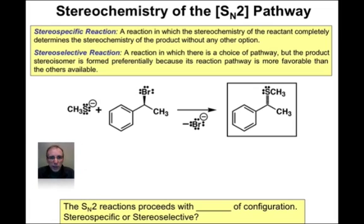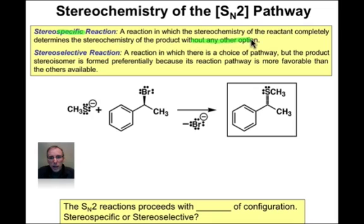Let me introduce some words that describe the stereochemistry of reactions. We say that a reaction is stereospecific if the stereochemistry of the reactant completely determines the stereochemistry of the product, and there are no other options. In other words, the pathway of this reaction and the orbitals involved have a very specific interaction that governs the stereochemistry, and it can only be one way. Once we know the stereochemistry of the reactant, the reaction pathway immediately determines the stereochemistry of the product.